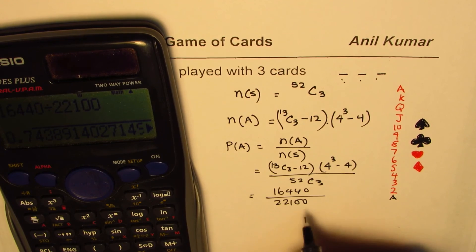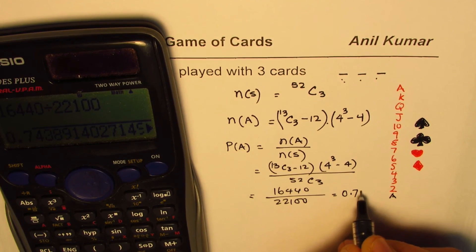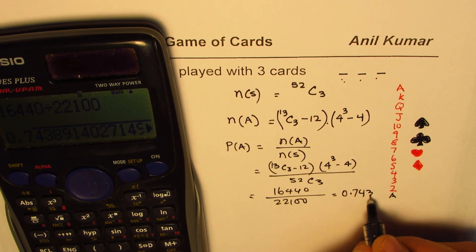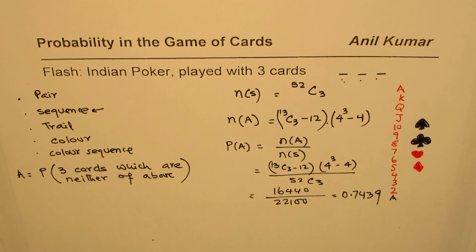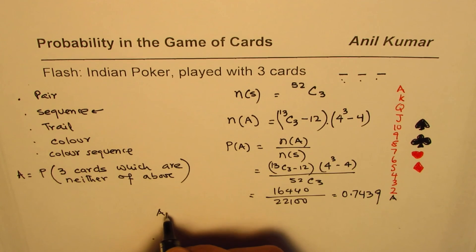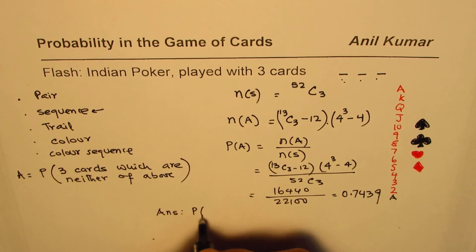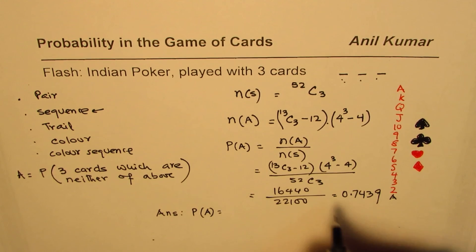And now we'll divide 16,440 divided by 22,100 to get the probability in decimals. It is 0.74, we can say 39. So it is 74 percent chances of getting a combination which is none of these. In our case, the answer will be probability of getting such cards is very high. It is approximately we can say 74.4 percent.